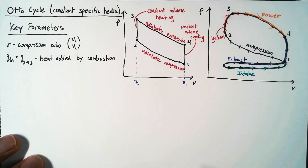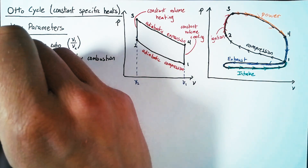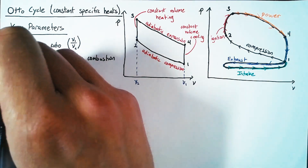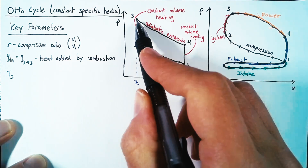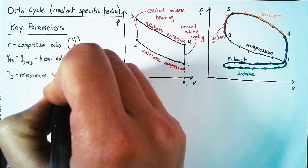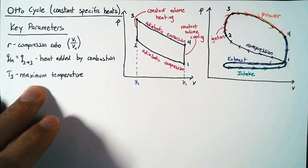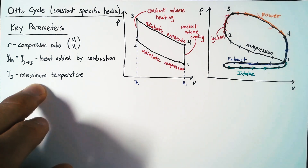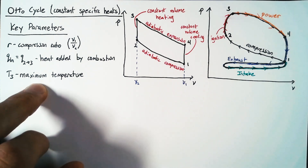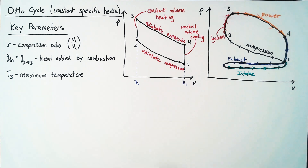Another important parameter is the third temperature, T3. This T3 value is the maximum temperature in our cycle, and it's really valuable because it helps us determine what types of materials we need in order to keep this process going long term.